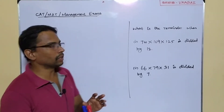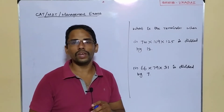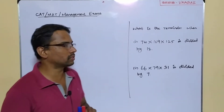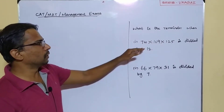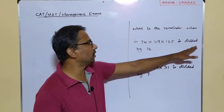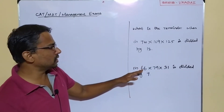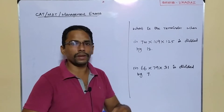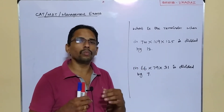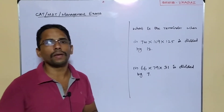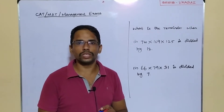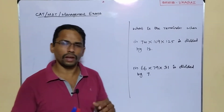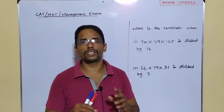Hello everybody. In this session under the playlist CAT, MAT and management exams, we are about to solve two basic questions from the concept of remainders. Without wasting time, let's directly get into the questions. What is the remainder when the product 74×109×125 is divided by 12? And the second question: 66×79×31 is divided by 7. These kinds of questions appear very frequently in management exams like CAT, MAT, and other state-level and national-level management exams.